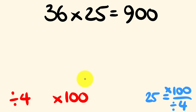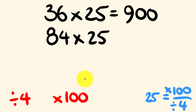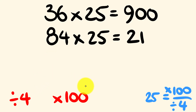They're going to get a little bit harder, but not that much harder. Let's look at 84 multiplied by 25. First we divide by 4: 84 divided by 4 is equal to 21. Then 21 times 100 is 2100.